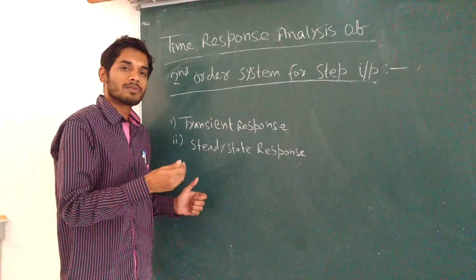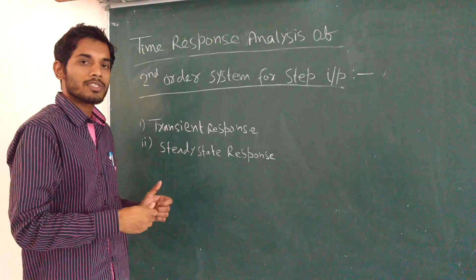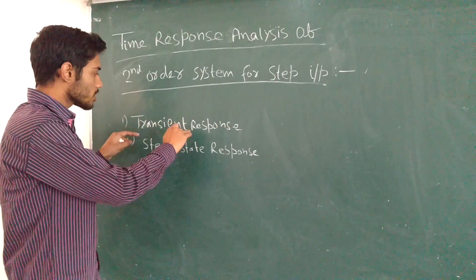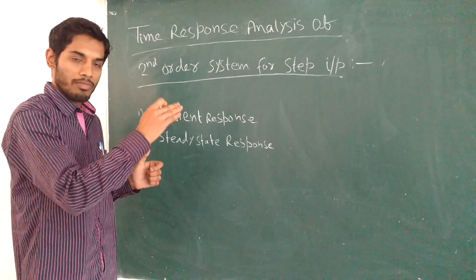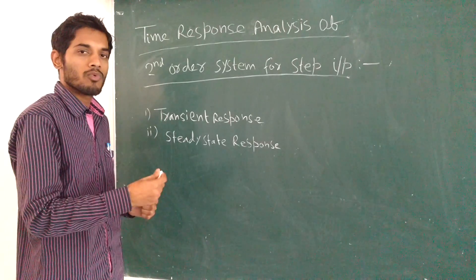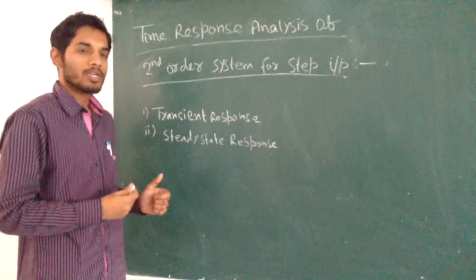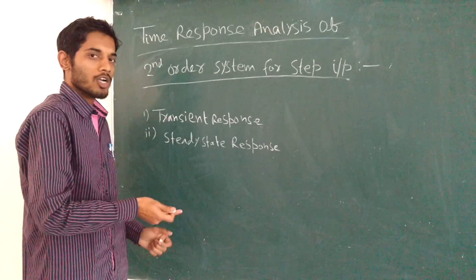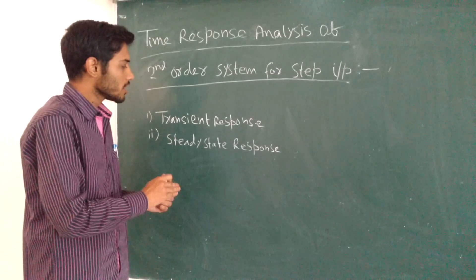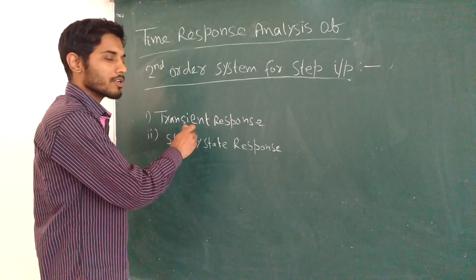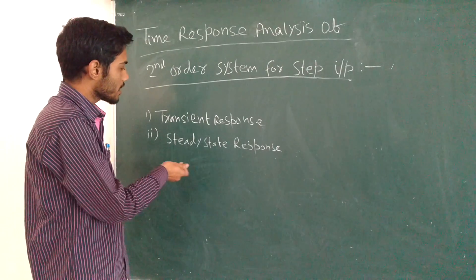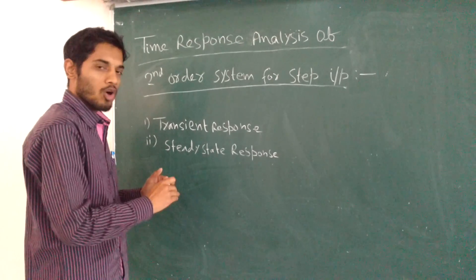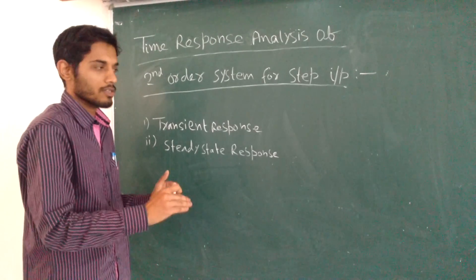Transient response is a part of the response which goes to zero after a certain interval of time, or we can say that in this response, the value of output changes from one value to another value with respect to time. Steady state response is a part of the response which remains even after the transient has died out, or we can say that in this response, the output remains constant.